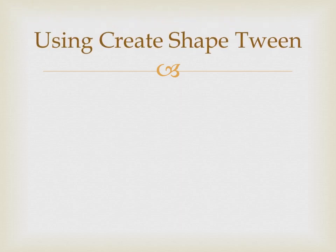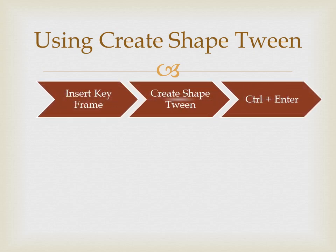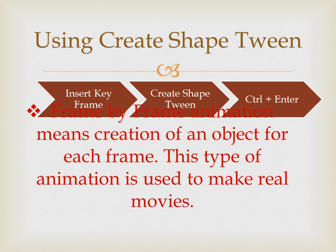The next topic is using Create Shape Tween. First, change the background color of the stage and draw an object in the first frame. Right-click the frame up to where you want the animation to continue and click Insert Keyframe. Now delete the first object and draw another object. Right-click on the first frame and select Create Shape Tween, then press Ctrl+Enter to test the movie.